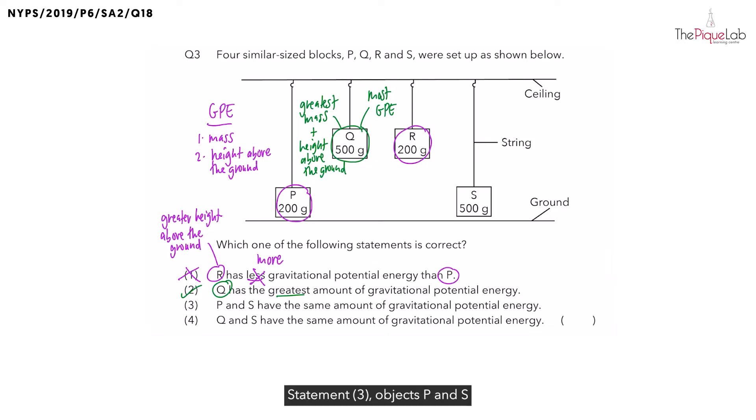Statement 3: Objects P and S have the same amount of GPE. So we have object P over here and object S here. What can you say about its height above the ground? Both objects are at the same height above the ground. But what about the mass?